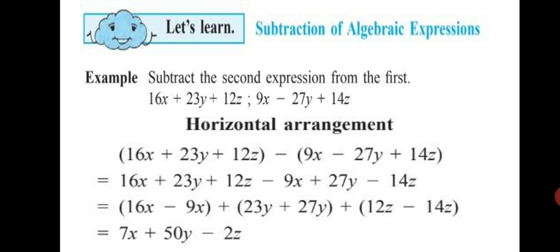For horizontal arrangement, you will take the expressions in brackets and put a minus sign in between them since the question is asking subtraction. When subtracting, the first step is to write the first expression as it is without brackets — so we write 16x plus 23y plus 12z. Now since we have to subtract, we will change the signs of each term in the second bracket: 9x will become minus 9x, minus 27y will become plus 27y, and plus 14z will become minus 14z. This is the only additional step you have to do while subtracting algebraic expressions.